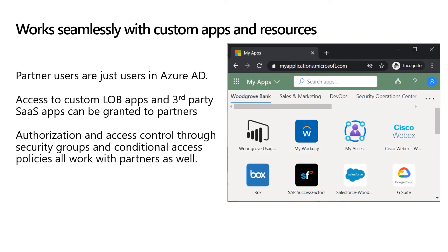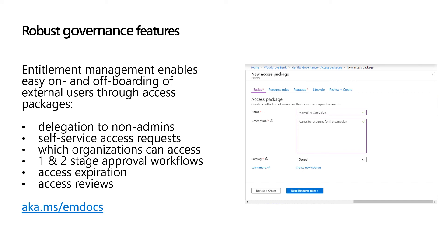One nice thing about Azure AD B2B is that partner users act as standard users in many ways. You can assign them to apps the same way, and they can use the access panel to access the apps you've shared with them. You can use security groups and conditional access policies to control access from external users. Entitlement management allows you to delegate the ability to create access packages to business owners. Access packages wrap up the resource, who can request access, how long that access lasts, and who is responsible for reviewing that access. Access packages then become available in the access panel for your external users to request.